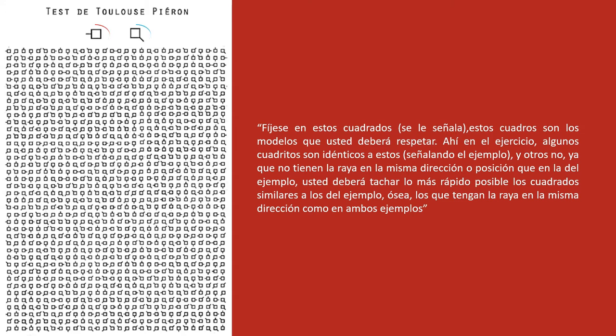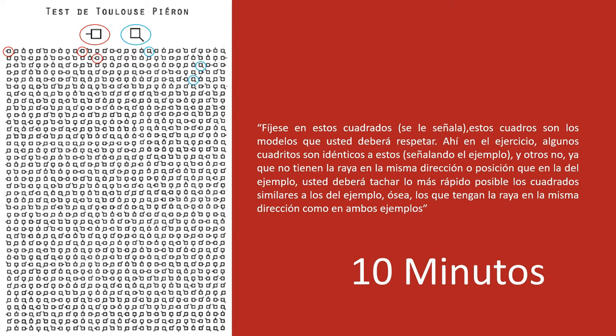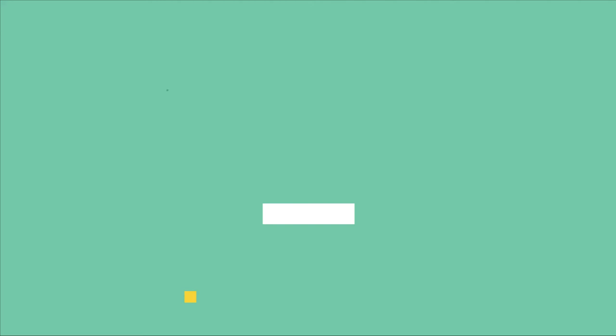Una vez culminado ese paso, se dan las instrucciones sobre cómo resolverán el test. Se le otorgará el permiso de voltear la hoja y se le dirá: 'Fíjese en estos cuadros —señalando los modelos—. Estos cuadros son los modelos que usted deberá respetar. Ahí en el ejercicio hay algunos cuadritos que son idénticos a estos; otros no, ya que no tienen la raya en la misma dirección o posición que en los del ejemplo. Usted deberá tachar lo más rápido posible los cuadrados similares a los del ejemplo.' Se repiten las instrucciones si es necesario y se coloca un cronómetro por 10 minutos. Una vez culminado el tiempo, se le indica: 'Atención, basta, suelte el lápiz.' El material es recogido y queda finalizada la intervención.